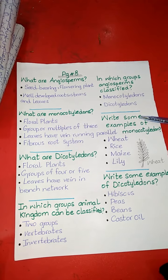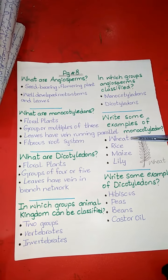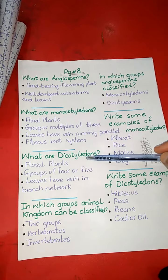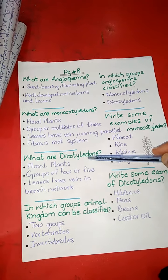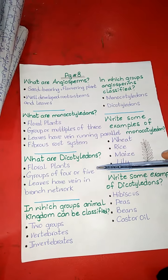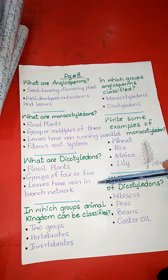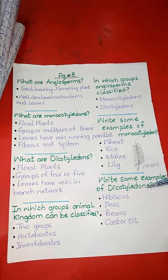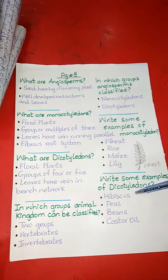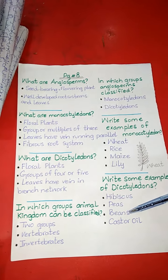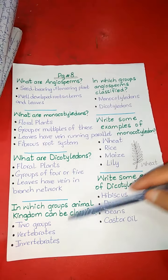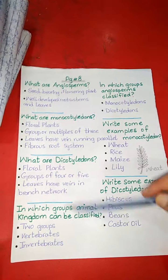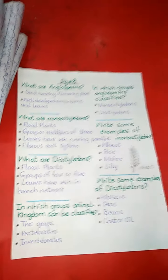Write some examples of monocotyledons. Four examples: wheat, rice, maize, lily. What are dicotyledons? They are also floral plants arranged in groups of four or five. Their leaves have veins in a branch network. Write some examples of dicotyledons: hibiscus, peas, beans and castor oil. In which groups can the animal kingdom be classified? Two groups: vertebrates and invertebrates.